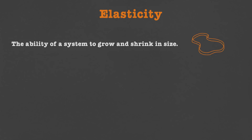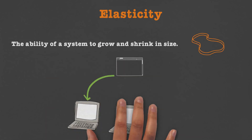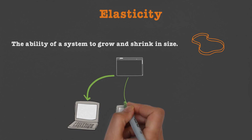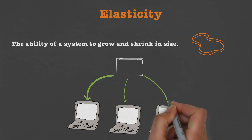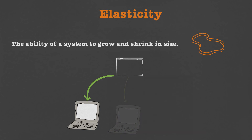Next we talk about the concept of elasticity. Elasticity refers to the ability of a system to grow and shrink in size. Remember, a scalable system can grow, but it does not necessarily mean that it can also shrink. However, for a system to be considered elastic, it must be able to grow and shrink in size.